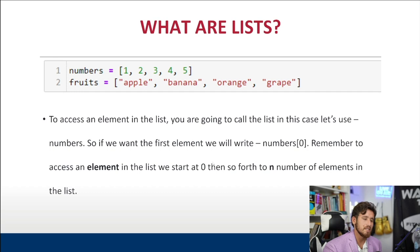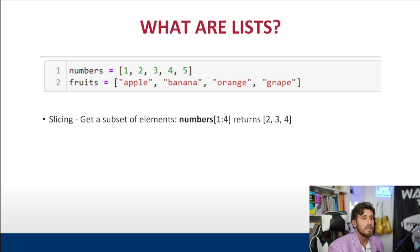We can slice lists by getting a subset of elements. Let's say we only want to get the elements from index one to four — this will return the values at those positions. Because lists start at index zero, if we did zero to four we would get the first four elements. There are also ways to find out how long your list is.